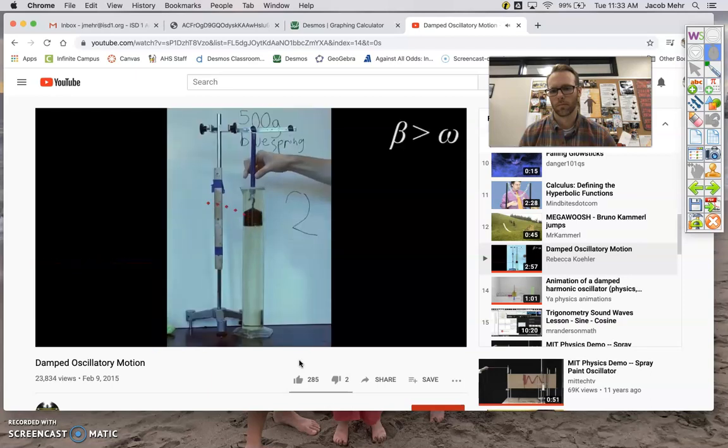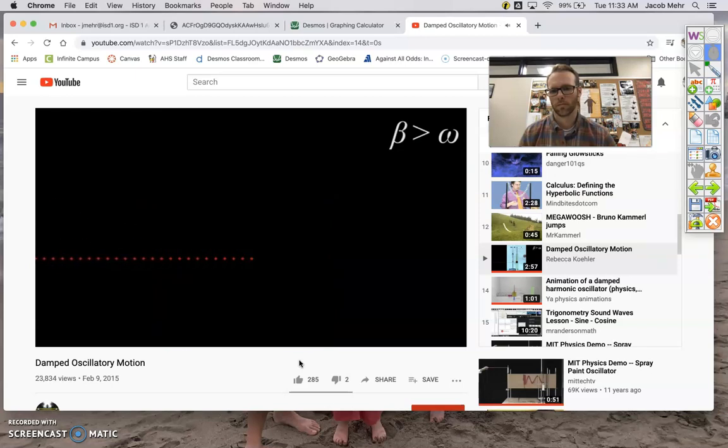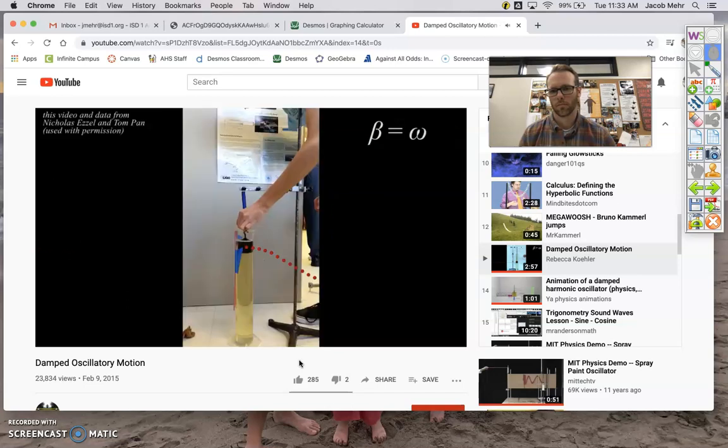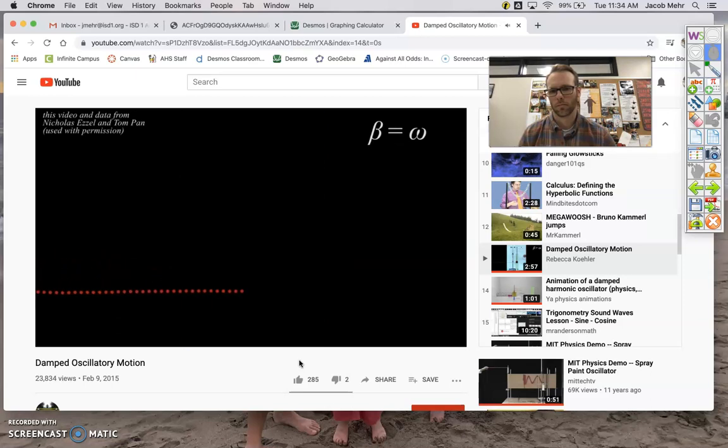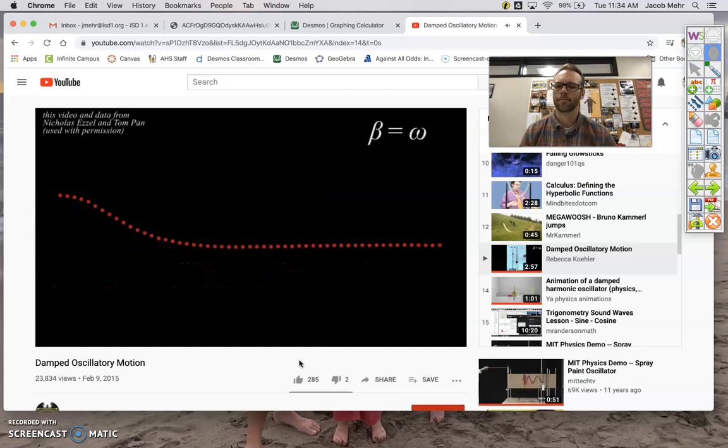If beta is greater than omega, the system is overdamped. In overdamped systems, the system returns to equilibrium without ever oscillating. If beta is equal to omega, the system is critically damped. For critically damped systems, the system returns to equilibrium without oscillating as quickly as possible. This is similar to overdamped oscillatory motion, but it returns to equilibrium more swiftly.